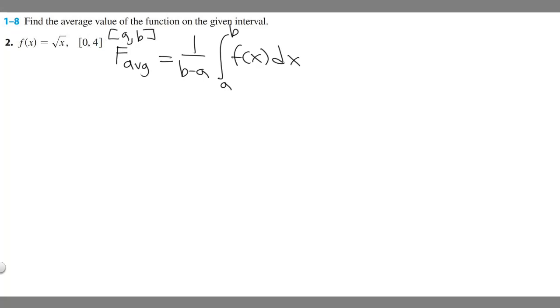So now we know that, all we got to do is plug in, so it's going to be equal to 1 over b, which we know is 4, minus 0, because that's a, and then 1 over 4 minus 0 is just 1 over 4.